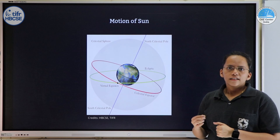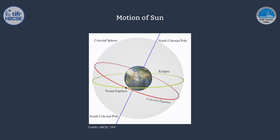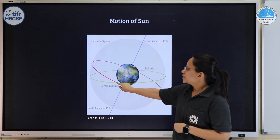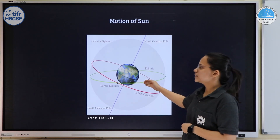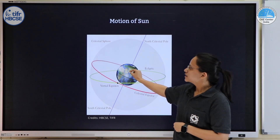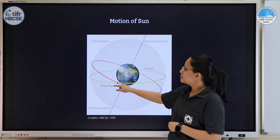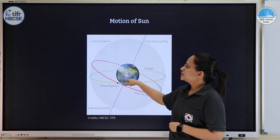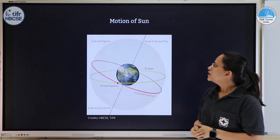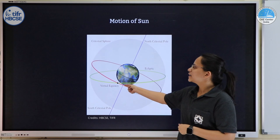We also know that the sun moves along the ecliptic. On the celestial sphere, the ecliptic intersects the equator at two points: the vernal equinox and the autumnal equinox. The sun moves along the ecliptic starting from the vernal equinox, enters the northern hemisphere, reaches the northernmost point at summer solstice, then descends back through the autumnal equinox, goes to the southernmost point at winter solstice, and returns to the vernal equinox. This entire journey takes one year — 360 degrees divided by 365 days — so the sun moves on average at one degree per day along the ecliptic.